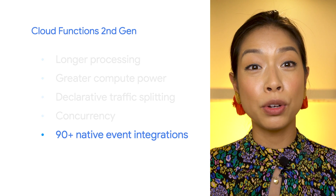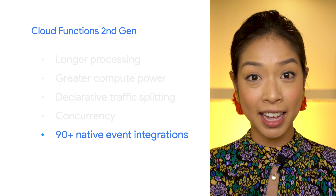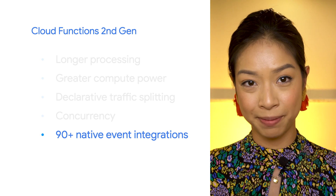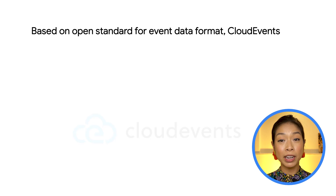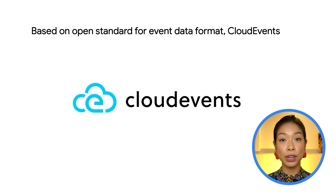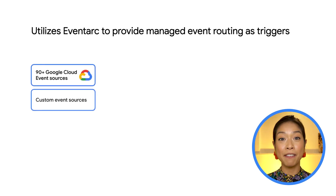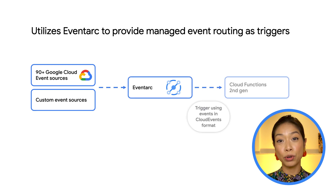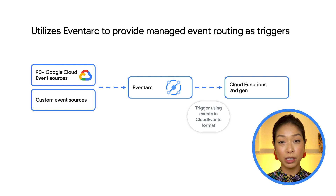Last but not least, let's talk about the new eventing model in Cloud Functions Second Generation. The previous generation had a smaller, fairly limited set of events that could trigger your code's execution. If you wanted to trigger outside of that set, you typically had to wire code to publish events to Cloud Pub/Sub. By integrating with EventArc, every event that triggers your code now adheres to the Cloud Events specification — an open standard for event data format — meaning your code can consistently handle events in the same format regardless of the source. With these EventArc integrations, over 90 event sources using Cloud Audit Logs can now be natively created as triggers, with no custom wiring required.